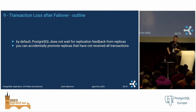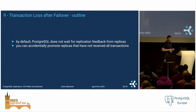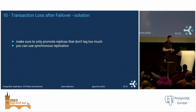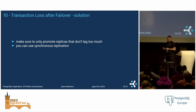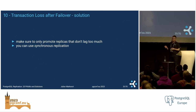The next pitfall is transaction loss after failover. By default, PostgreSQL does not wait for any feedback from replicas when they are replicating. It's quite possible that you accidentally promote a replica that has not received all of the transactions. The solution is to make sure you only promote replicas that don't lag too much. Some high availability tools like Patroni have a countermeasure against this built-in, or you could use synchronous replication.